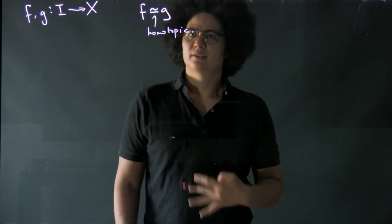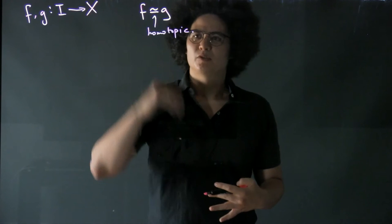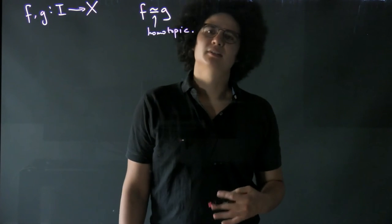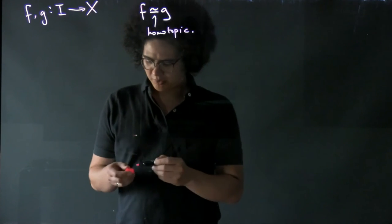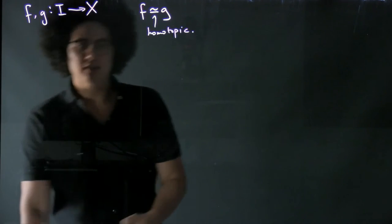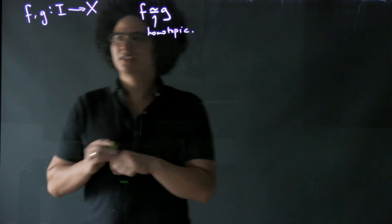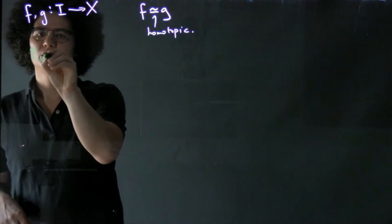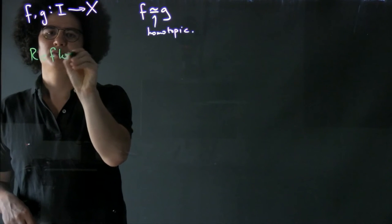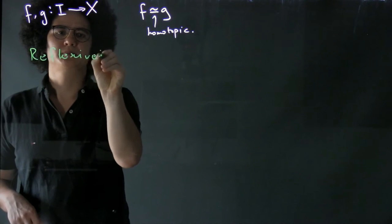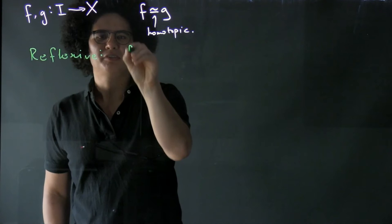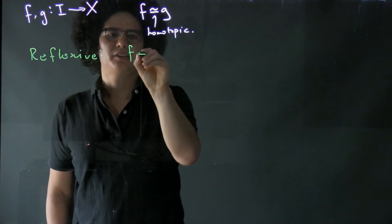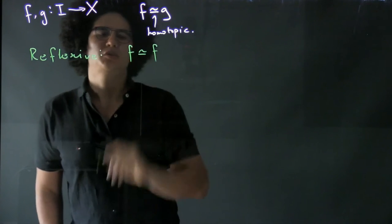I want to show now that a homotopy of paths is an equivalence relation. So what do we need to show? Well, we need to show reflexivity, so reflexive. And what does that look like? We want to show that F, some path, is homotopic to itself.